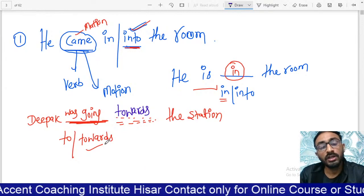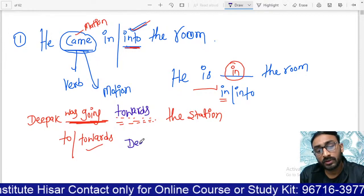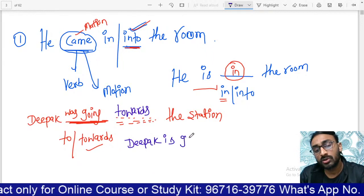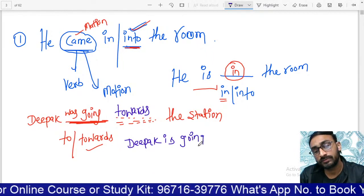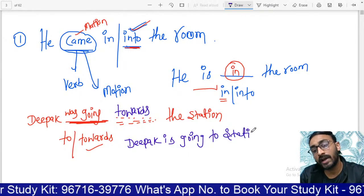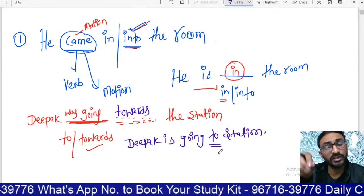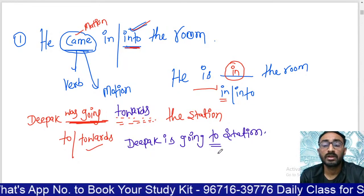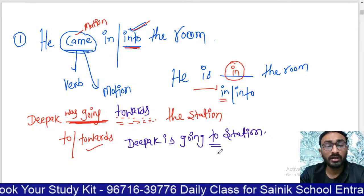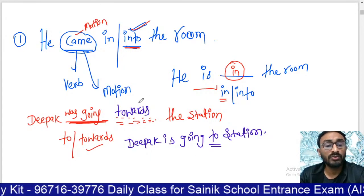If I say 'Deepak is going to the station,' it means I am definitely sure that the person is going to that specific destination. If you are sure he is going there, you write 'to'; otherwise you write 'towards.'